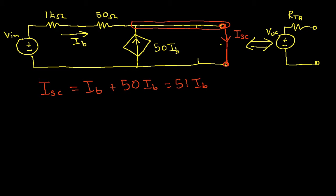Now I need to figure out what IB is. Because you'll notice the voltage from here to here is the same as VIN. Because from here all the way down through my short circuit and back around, that's all just a wire. So basically the voltage across the series combination of the 1k ohm and the 50 ohm resistor is VIN.